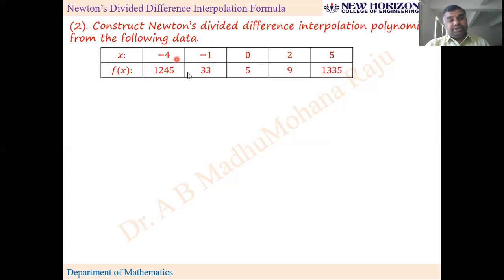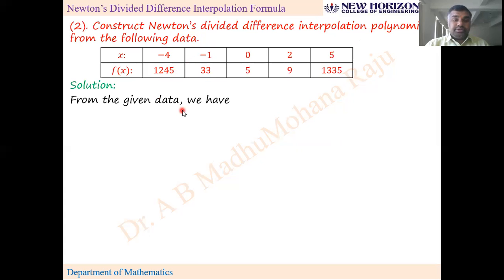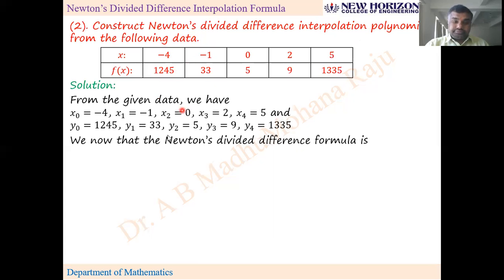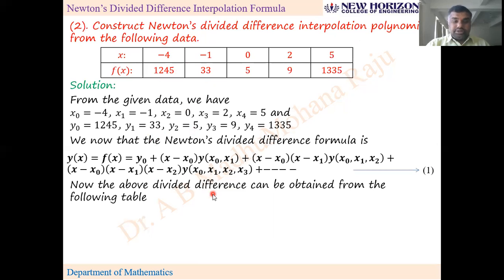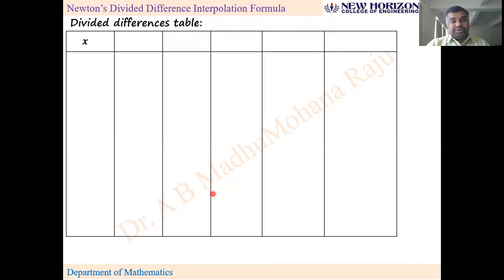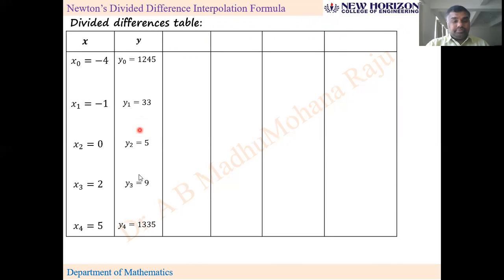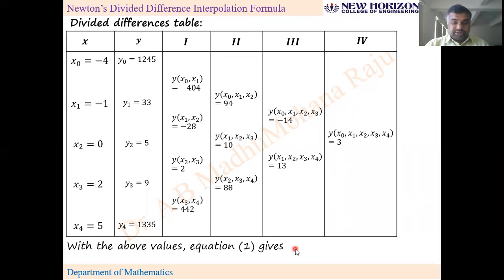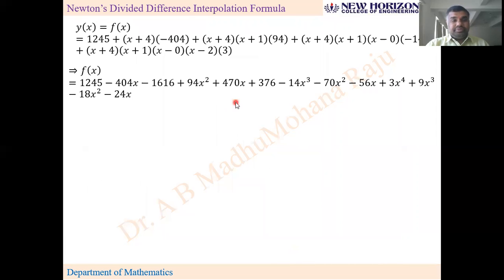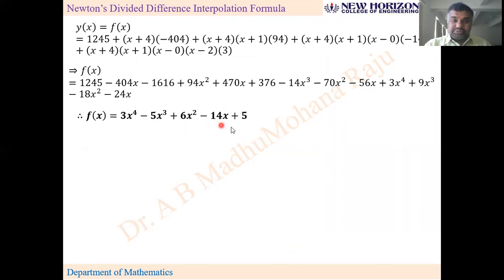Next problem: Construct the Newton's divided difference interpolation polynomial from the following data. Instead of asking for a particular value, this asks us to construct the polynomial. We list x values and y values, write the formula, build the divided differences table with first, second, third, and fourth order differences, take the upper diagonal values, substitute into equation 1, and simplify to get the polynomial: 3x⁴ − 5x³ + 6x² − 14x + 5.